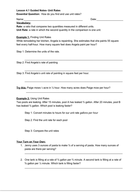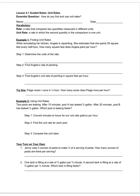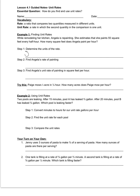Our first step is to determine the units of our rate. We have two things: square feet and time, which is in hours. Now, Angela is able to paint 55 square feet in one-half hour. Notice we have a fraction within a fraction — as we recall from our last module, this is called a complex fraction.